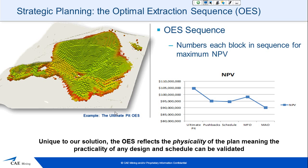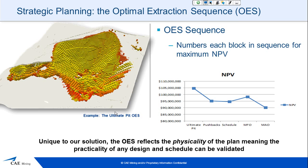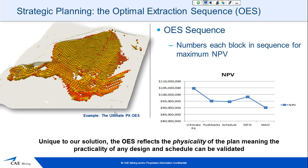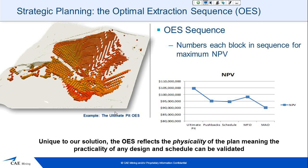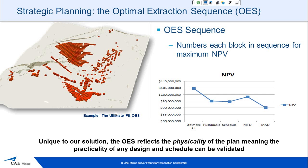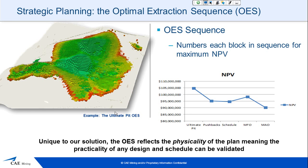Each block has been sequenced for maximum NPV. This sequence would be the same whether your time periods were broken down by years, quarters, or months — the sequence should remain the same. That means your NPV should be maximised, always, no matter what time scale you look at.